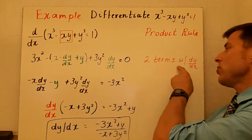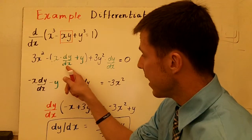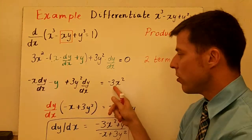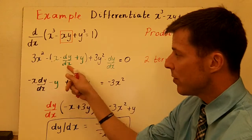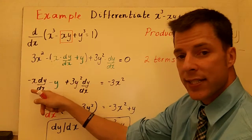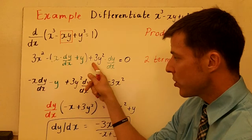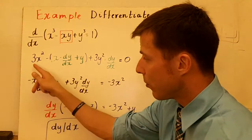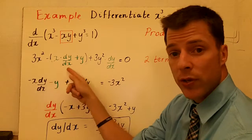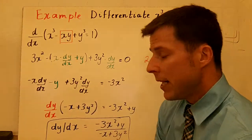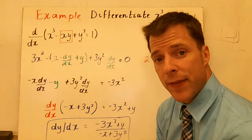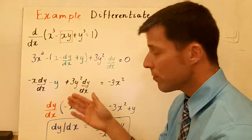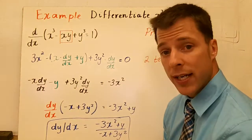It's important to know that we have two terms with dy/dx now — inside and right here. The first thing I did is I subtracted 3x squared from both sides, and then I distributed the negative. I have negative x dy/dx minus y plus 3y squared dy/dx equals negative 3x squared. I brought this term over and then distributed the negative. Now, if we're solving for dy/dx and two terms have dy/dx, you have to get dy/dx alone — if two terms have that in common, factor out the dy/dx.